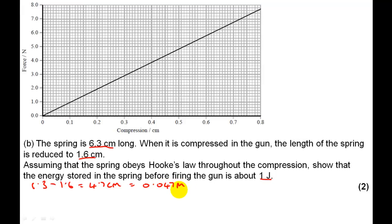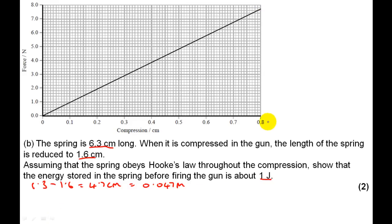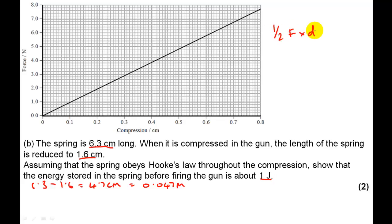We have the compression and the spring constant from the previous question. The energy stored in a spring is the area under the force-extension or force-compression graph, because you're doing work on the spring — applying a force through a distance. Since the force is changing, you take the average, which works out to be the area under the graph: half the force multiplied by the compression distance.